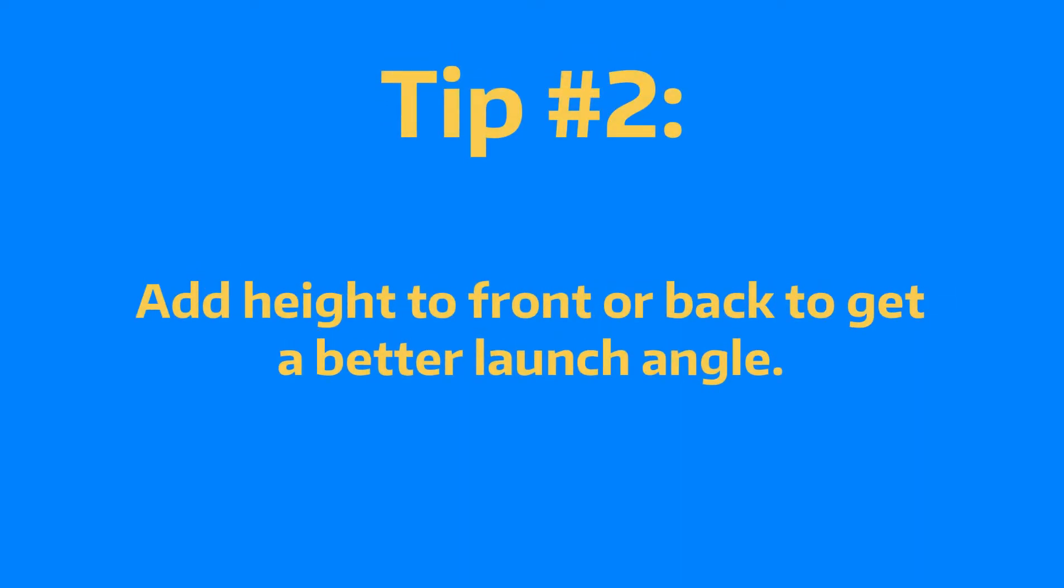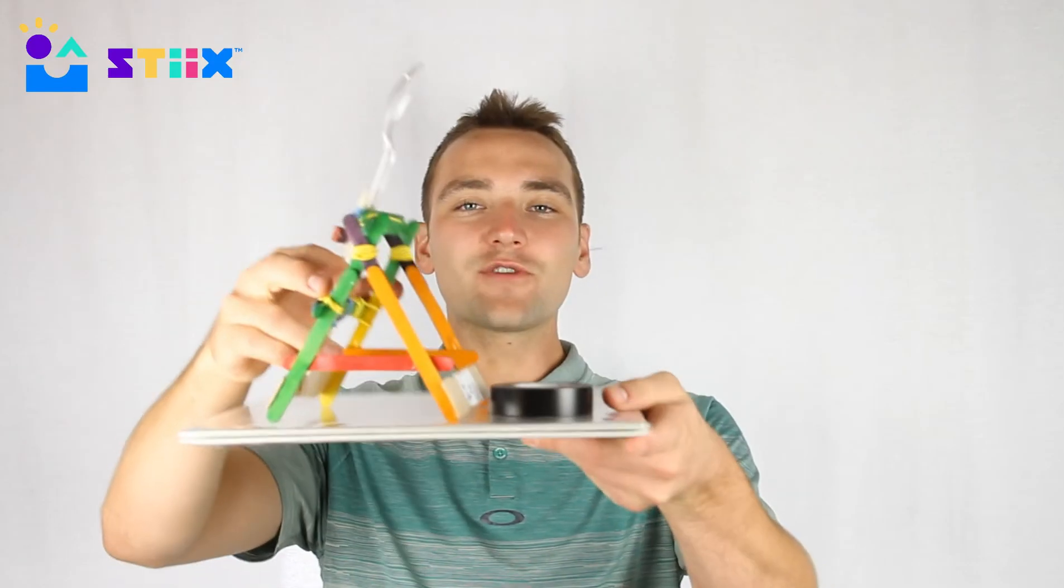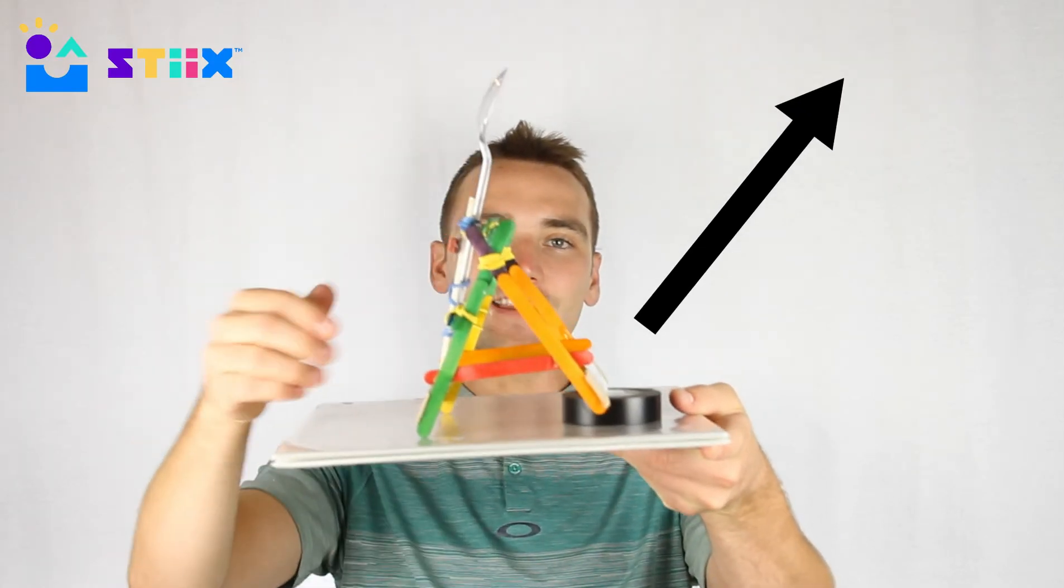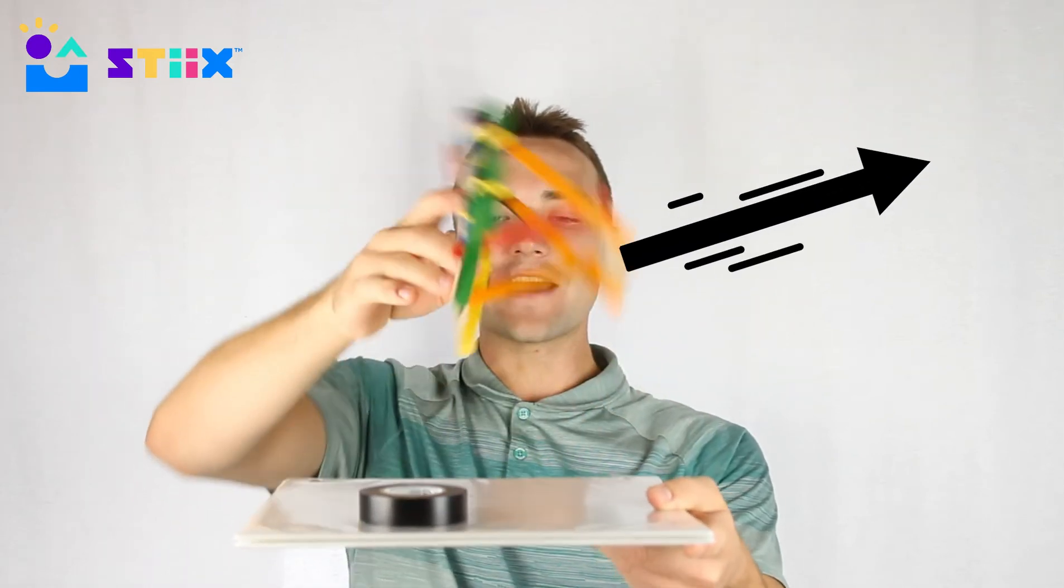Our second tip is if you're having trouble achieving that 45-ish degree angle, you can always add some height to the front if you need your design to go higher, or put some height on the back to make it go lower.